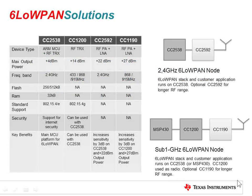Now that we understand the applications, let's dive deeper into some of the products. The most popular wireless MCU from TI used for 6LowPAN is the CC2538. It can be used standalone for 2.4GHz operation or with the CC1200 for sub-1GHz operation. For applications that require longer range or better sensitivity, there is an option to extend RF range between wireless nodes with TI's integrated range extenders. The CC2592 is used for 2.4GHz and the CC1190 is used for sub-1GHz operations.